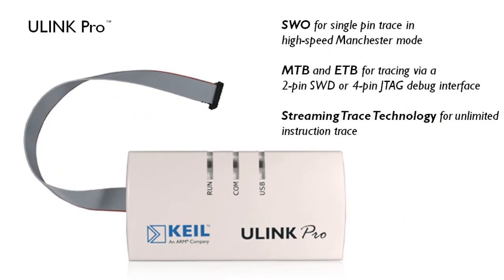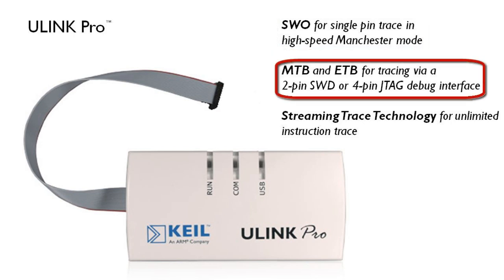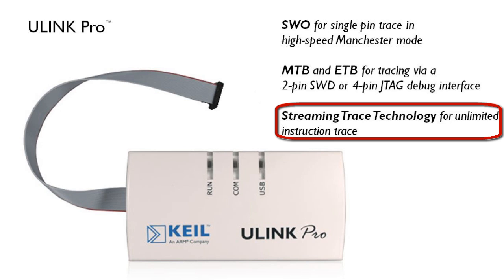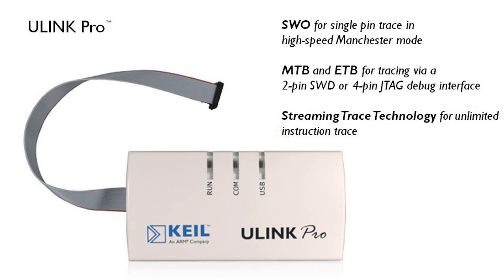The U-Link Pro is the ARM debug and trace adapter specifically designed for Cortex-M microcontrollers. It offers connectivity to all Cortex-M microcontrollers and supports all trace variants: SWO for single-pin trace in high-speed Manchester mode, MTB and ETB for tracing via a 2-pin SWD or 4-pin JTAG debug interface, and full instruction trace with U-Link Pro's streaming trace technology that records the complete program execution and overcomes trace buffer limitations, enabling full code coverage and performance analysis without compromises.